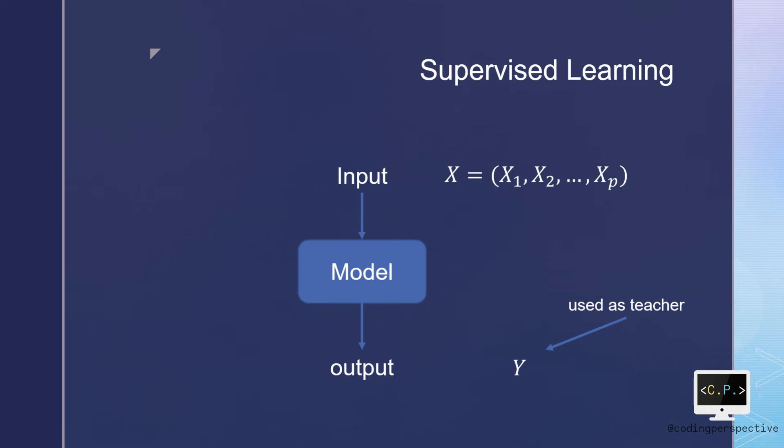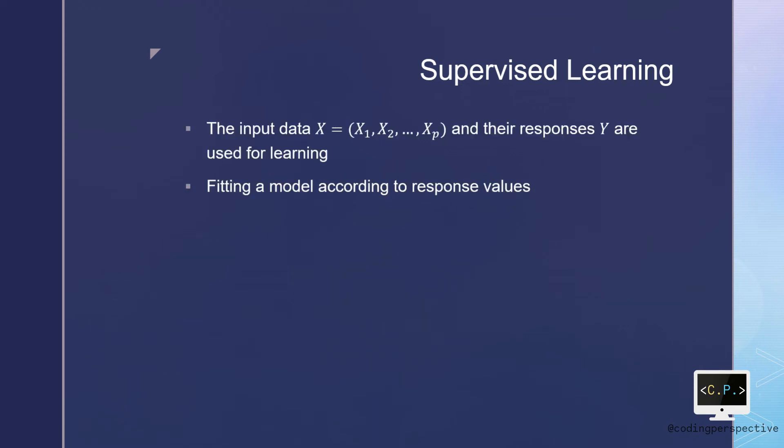We are trying to fit a model that relates the dependent variable or the y variable to the independent variables or the predictors to accurately predict the y values for our future observations, or better understand the relationship between the response and the predictors. Broadly speaking, supervised learning involves building a statistical model for predicting or estimating an output based on one or more inputs. We train our model using response variables.